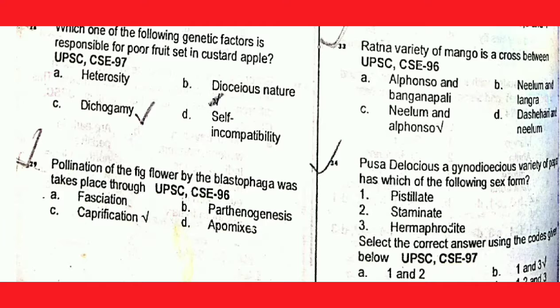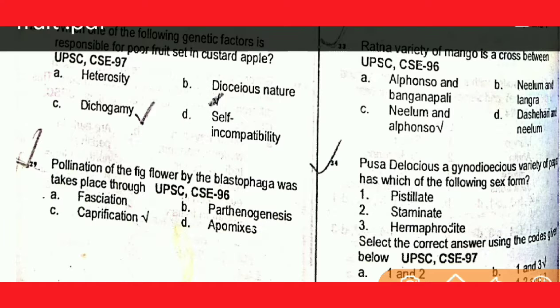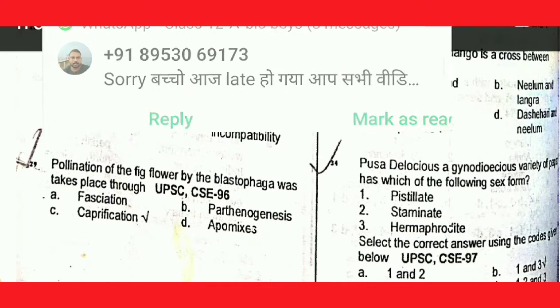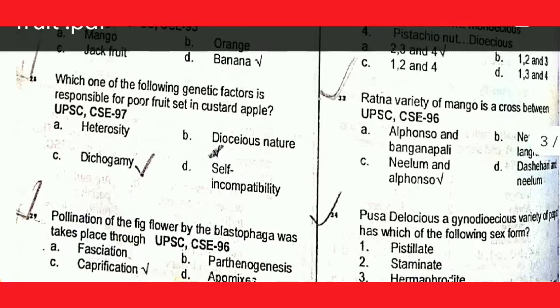Next question: pollination of fig flower by Blastophaga wasp takes place through caprification. Option C is correct.